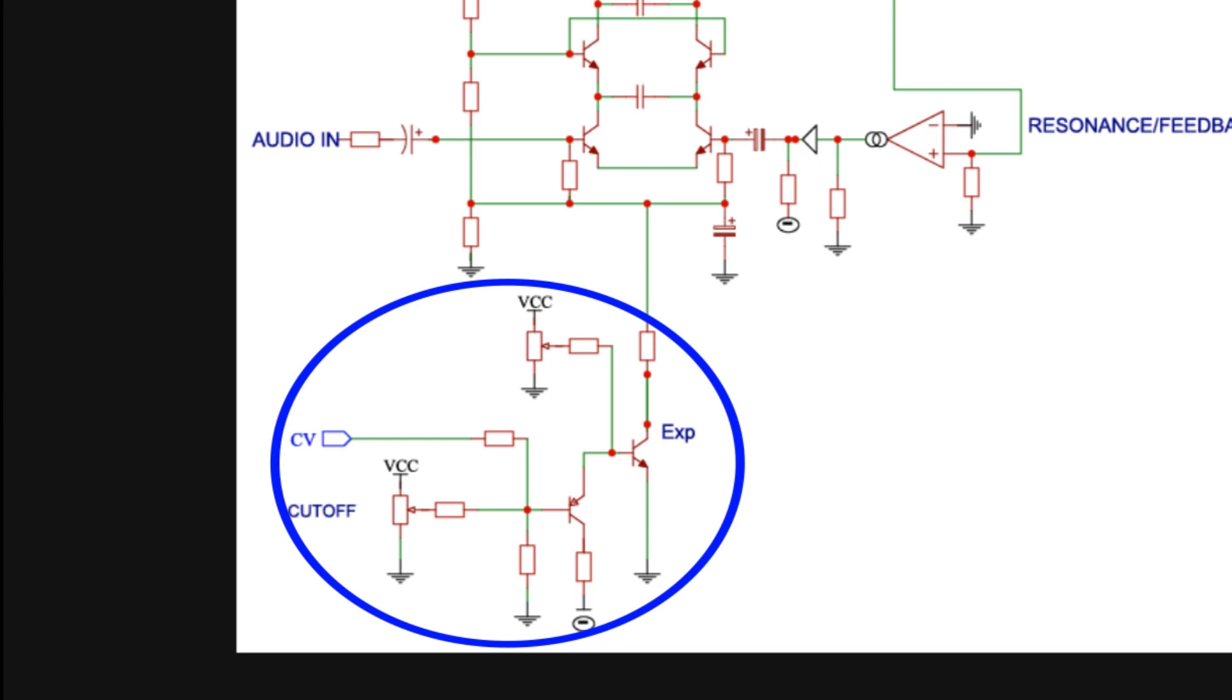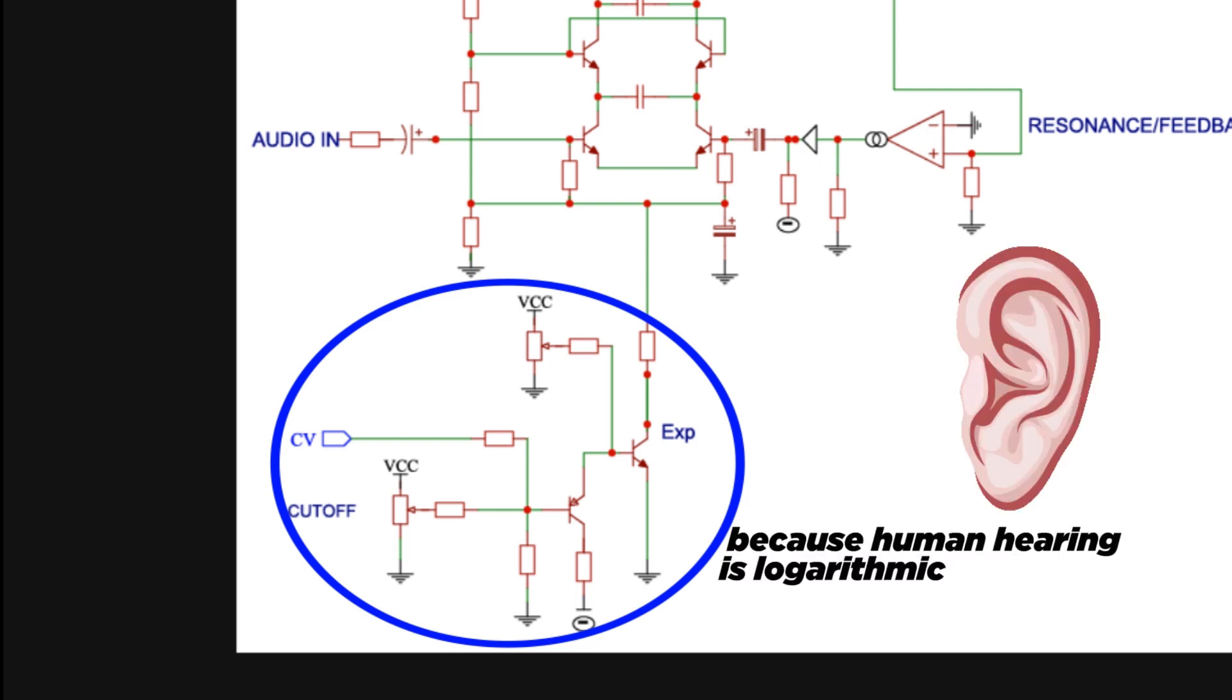We want to do fancier things by controlling the filter with an external control voltage instead of having to turn a knob all the time. And while we do that, we probably want the filter to respond exponentially to the control voltage.